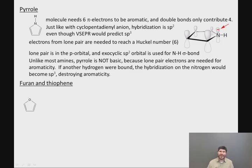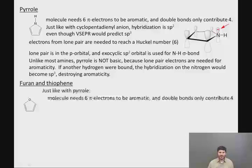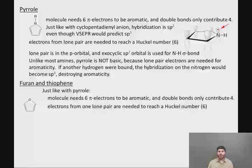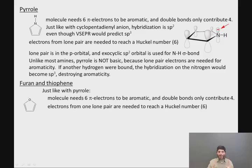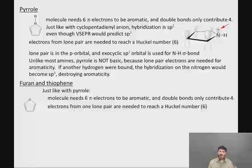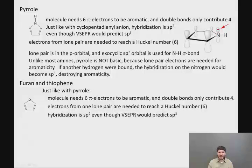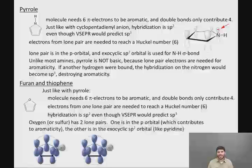Finally, let's look at furan and its sulfur containing cousin thiophene. Just like with pyrrole, the molecule needs six pi electrons to be aromatic, and the double bonds only contribute four. Therefore, the electrons from one lone pair on the oxygen or sulfur, not both, are needed to reach the Huckel number of six. Once again, the hybridization will be sp2, even though strict VSEPR arguments would predict sp3.